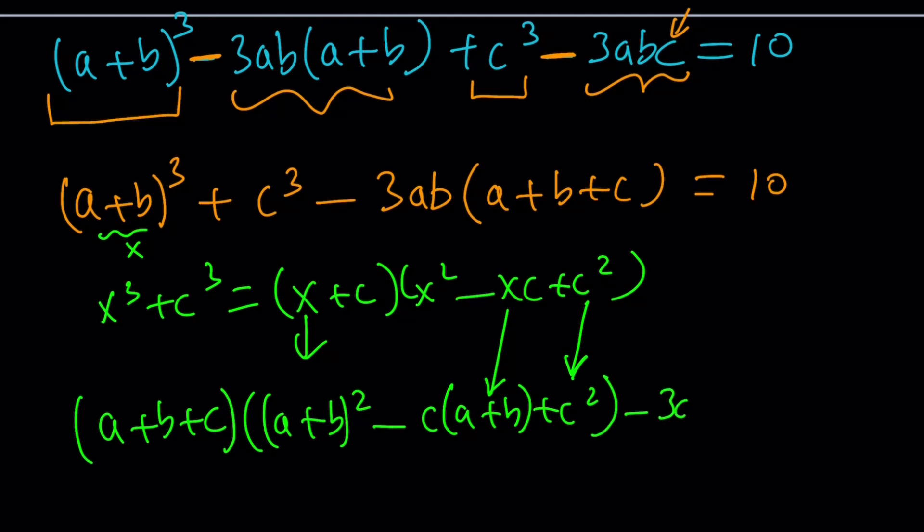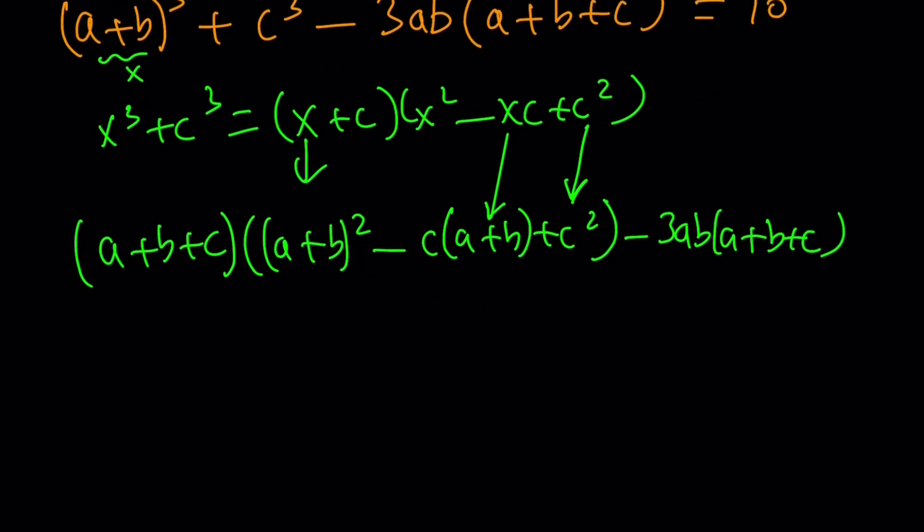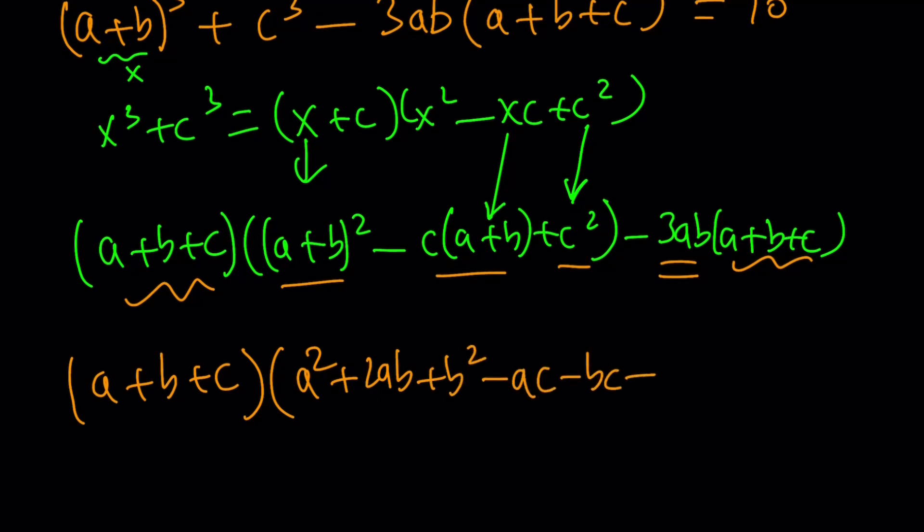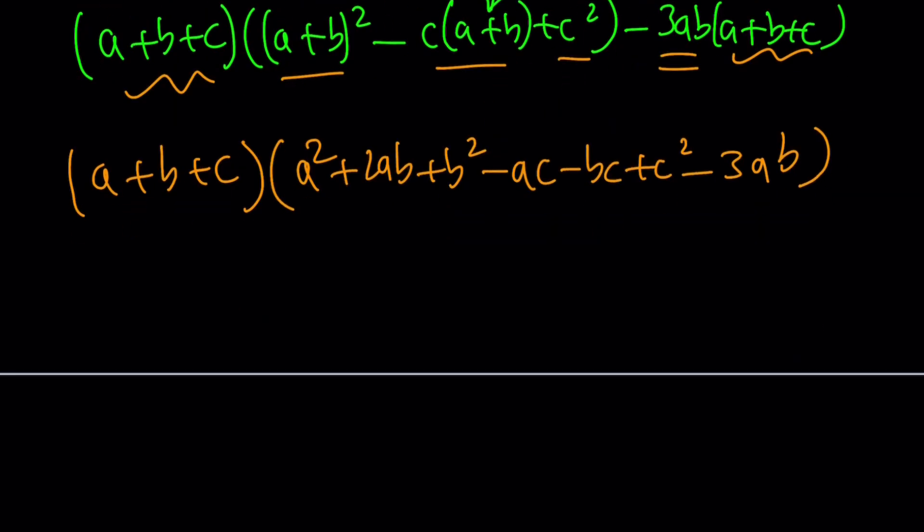And then followed by -3ab(a + b + c). And you got yourself another common factor. There you go. a + b + c. If you take that out, you're going to get this minus that. Let's go ahead and expand it. a² + 2ab + b² - ac - bc + c² - 3ab. Awesome. Do you think something good is going to come out of this? Absolutely. Of course.